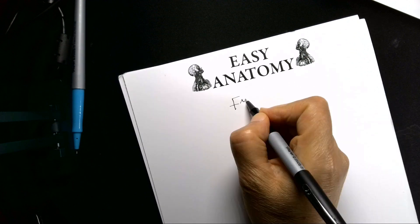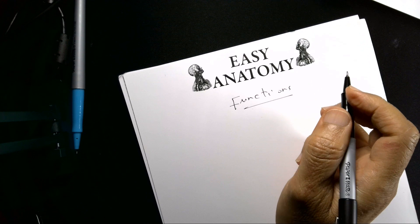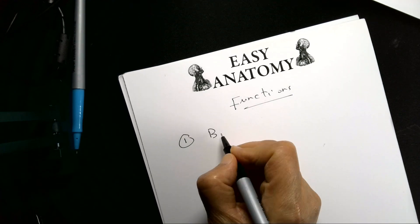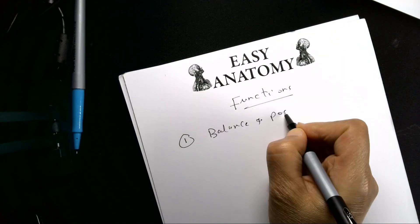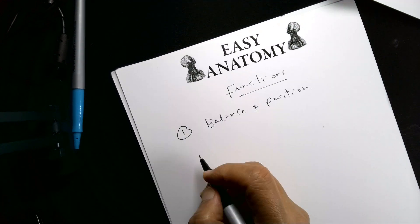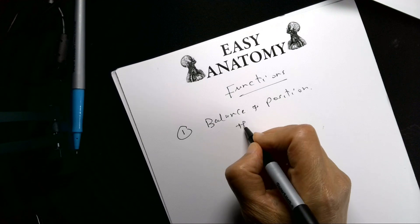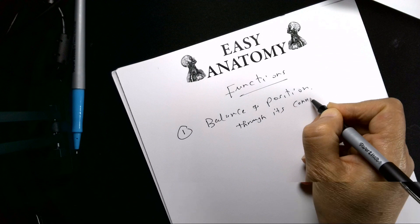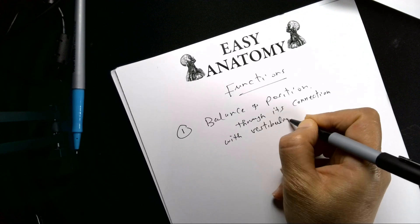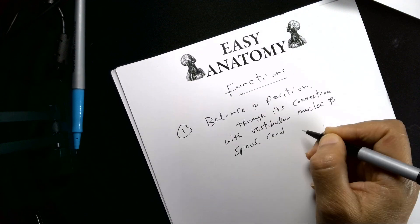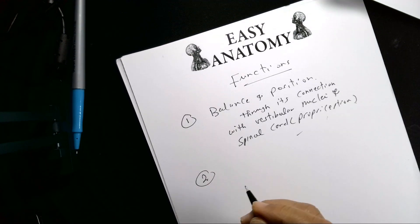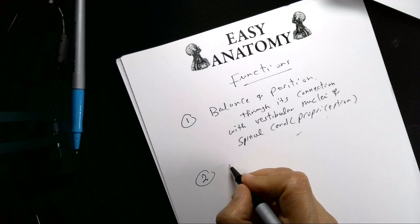The functions of the cerebellum are easy to remember. First: balance and position. The cerebellum is very important for maintaining balance and position, and this happens through its connection with the vestibular nuclei and the spinal cord, especially proprioception.